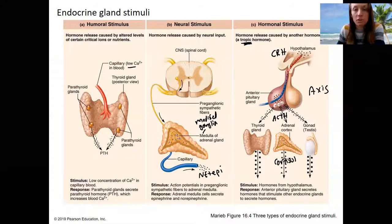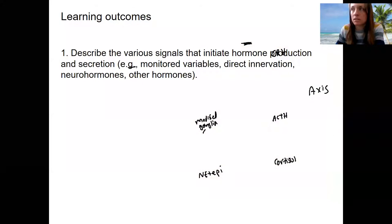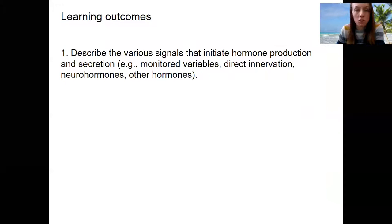So those are the three ways that endocrine glands can be stimulated. Your learning outcome here is to describe the signals that initiate hormone production.